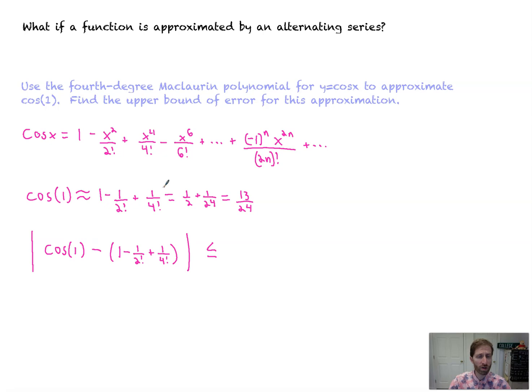So what would the next ignored term be? It would be plus, minus, plus, minus one to the sixth over six factorial. So that's over minus one over six factorial. No parentheses there. That would be an absolute value, which equals to one over, ooh, seven hundred twenty, if you wanted to simplify that up. So that's the upper bound of error.